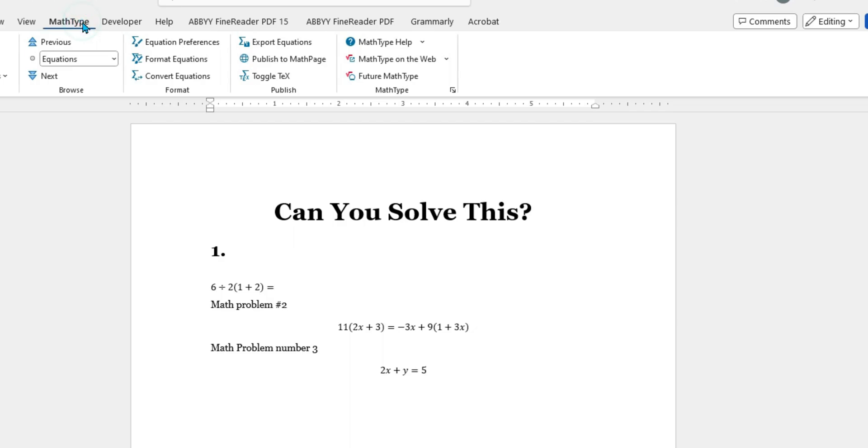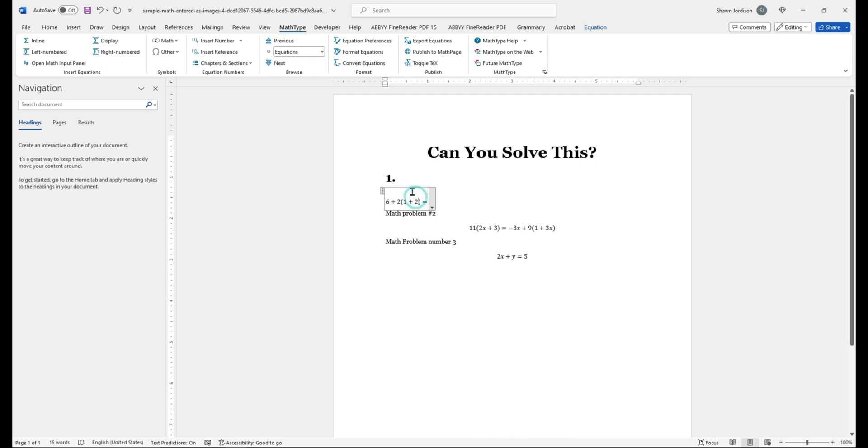I could use the MathType option and convert all of these OML equations into MathML. This is such a fantastic process for converting large portions of math from a PDF into a Word document that you can then manipulate even further.